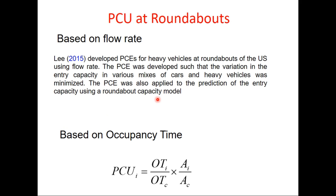At roundabouts, PCU can be based on either flow rate or occupancy time. Based on flow rate, the PCU factor is developed such that the variation in entry capacity across various mixes of cars and heavy vehicles is minimized — meaning the PCU factor should ensure that flow expressed in a common unit remains constant. Based on occupancy, the formula is: (OTI/OTC) × (aI/aC), where instead of width, the area of the vehicle is used, with aI being the area of vehicle type I and aC the area of the passenger car.